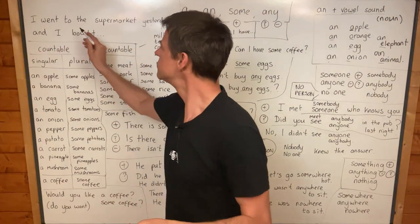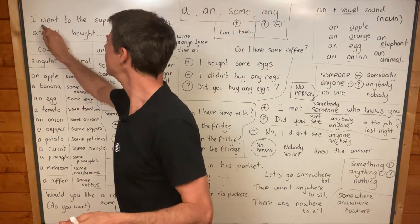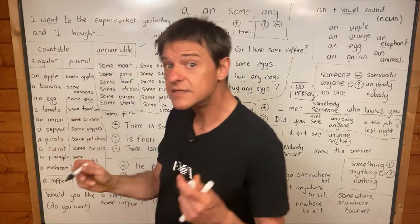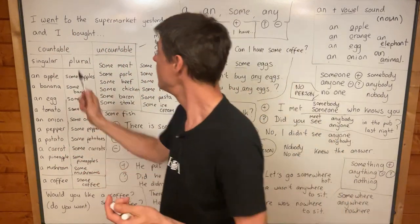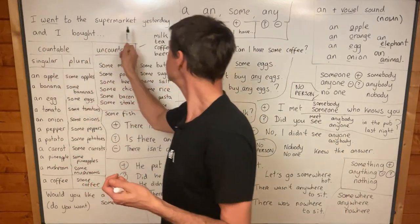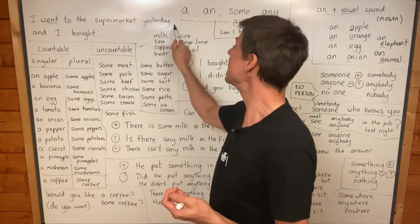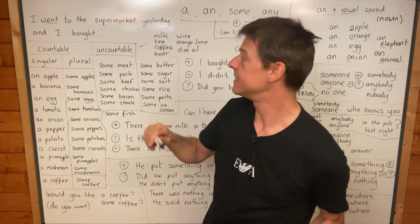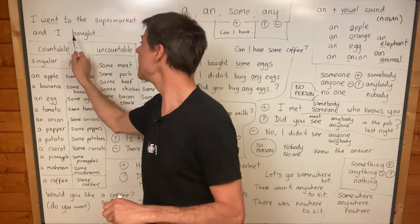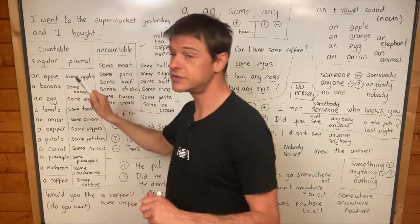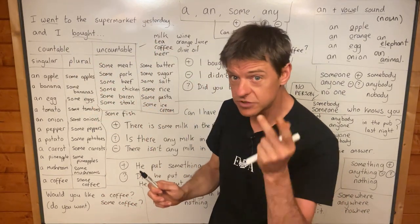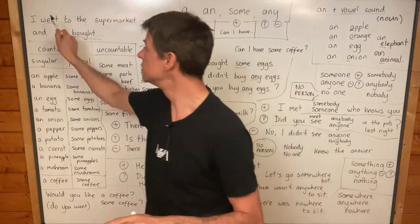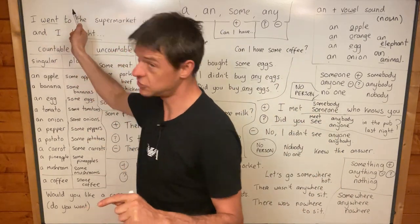I went to the supermarket yesterday — 'went' is past simple of 'go.' And I bought — 'bought' is past simple of 'buy.' Go, went, gone.